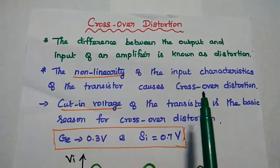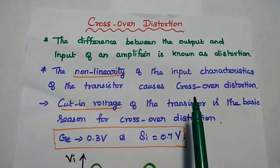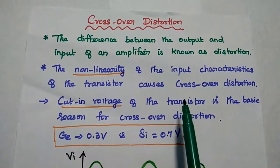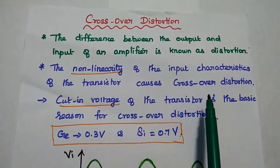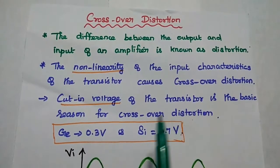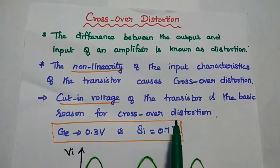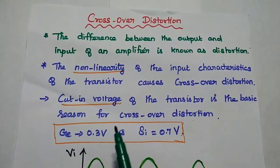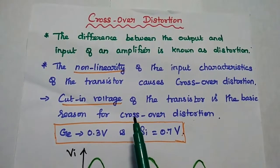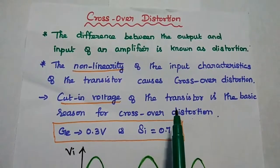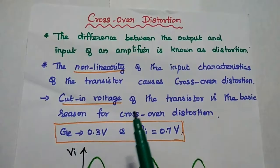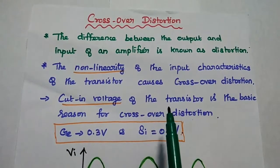The input characteristics of the transistor consist of three regions: cutoff region, active region, and saturation region. The cut-in voltage of the transistor is the basic reason for this crossover distortion. As long as the input voltage is less than the cut-in voltage, the transistor does not conduct. Whenever the input voltage is greater than the cut-in voltage, then only the transistor starts conducting.